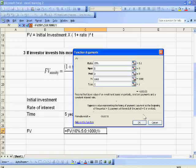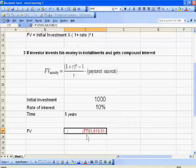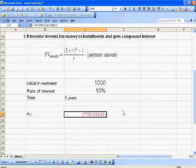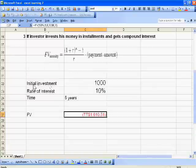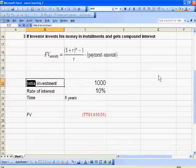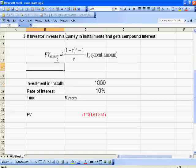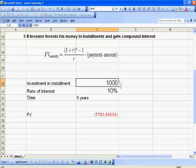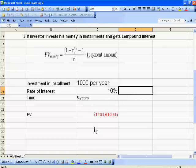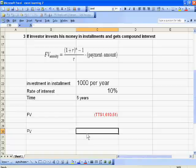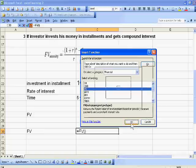One more example: if investment in installment is 1000 per year, 10% for five years, then we calculate the future value. We show 10%, five years.